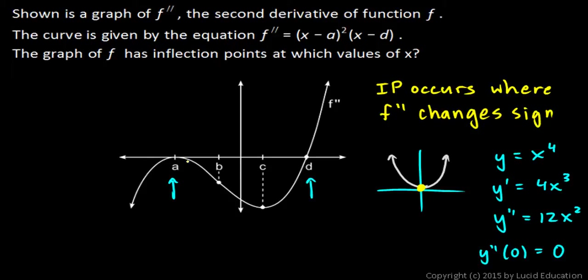because the graph of f'' simply touches the axis at that point. It does not change sign. So an inflection point occurs where f'' changes sign, and that happens at x equals d, and x equals d only.